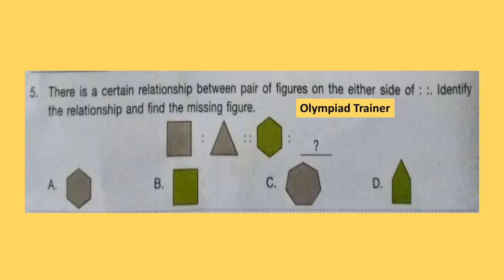Question 5. There is a certain relationship between the pair of figures on either side. Identify the relationship and find the missing figure. For the first relationship, there is a square and a triangle — a square has 4 sides and a triangle has 3 sides. Similarly, for the second pattern, the given figure has 6 sides, so the question mark will have 5 sides, which is figure D, and it will be of green color. So option D is the answer.